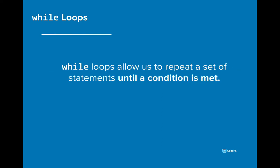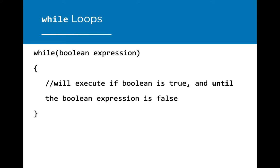While loops allow us to repeat a set of statements until a specific condition is met. Similarly to if statements, while loops evaluate a boolean expression. If the expression evaluates to true, then the code in the curly brackets will execute. If the expression evaluates to false, then the while loop will be skipped over. The main difference is that once the code within the while loop is executed, the program returns to the boolean expression to re-evaluate the condition. If the expression is still true after a run through the while loop, the while loop will run again. If it becomes false, then the while loop will stop.